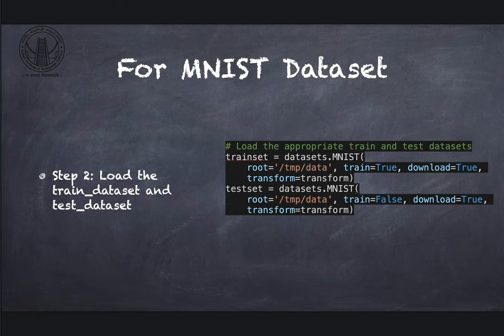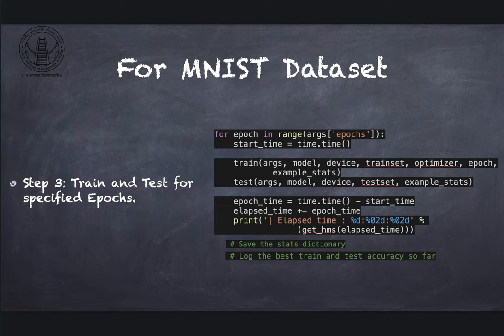Load the splitted dataset, that is train dataset and test dataset respectively. Then step three includes training the learning algorithm with the MNIST dataset for 200 epochs. Epochs can be changed manually also.